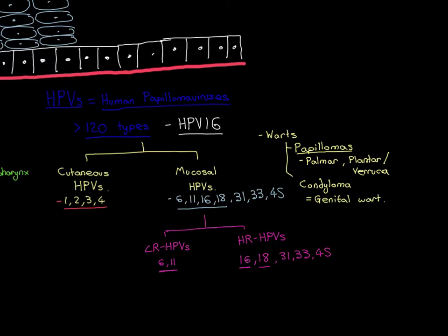For keratinised, the major example is the epidermis. For non-keratinised, we've been given a whole long list of examples, but importantly it includes the ectocervix — the epithelium that covers the ectocervix. We then went on to the fact that there are many different types of human papillomavirus, over 120 are currently known, and we can split these into two broad categories: the ones that infect keratinised squamous stratified epithelium, which we call the cutaneous HPVs, and those which infect the non-keratinised squamous stratified epithelium.